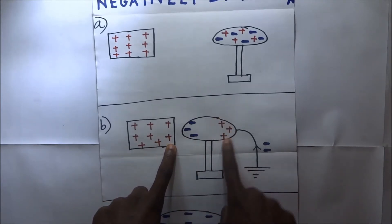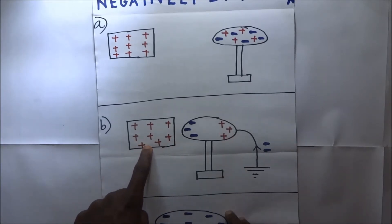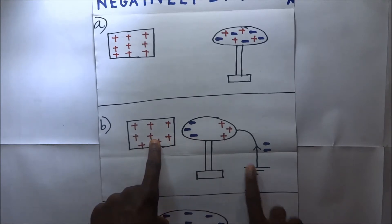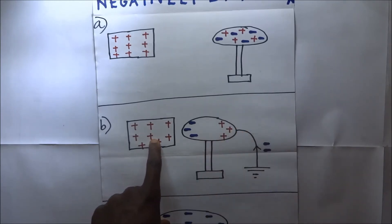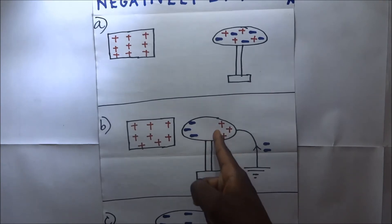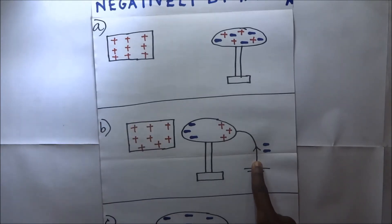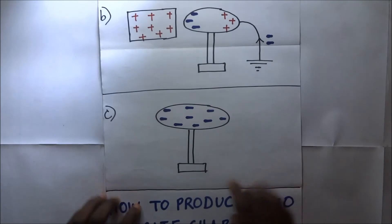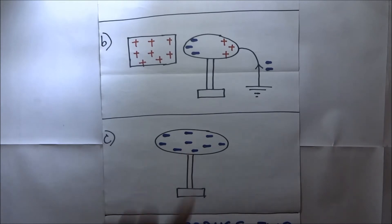This leaves the far side with more positive charges. While this body is still in the vicinity of the conductor, we earth the conductor. When we earth it, negative charges are attracted from the earth into the conductor, causing the conductor to gain more negative charges compared to the positive ones already there. When you break the earthing and remove the charged body all at once, you find that you have a body that is predominantly negatively charged. This is how we charge a body negatively by induction.